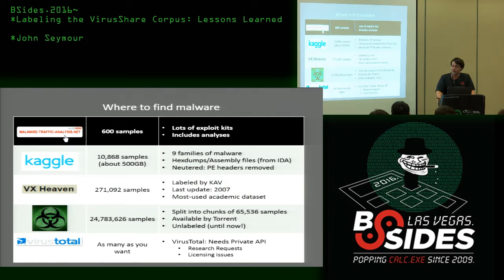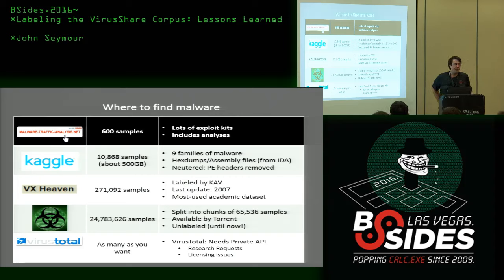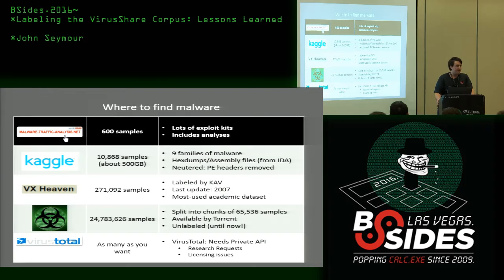Then there's the Kaggle dataset. Kaggle is a data science competition hosting site. Last year, Microsoft hosted a competition on Kaggle for classifying malware. They released about 11,000 samples — neutered a bit — at about 500 gigabytes. The task was: here are nine families of malware, figure out which executables in the test set belong to which families. They distributed hex dumps and disassembled files from IDA Pro with PE headers removed so nobody could execute the files. People used natural language processing techniques to fulfill the competition.